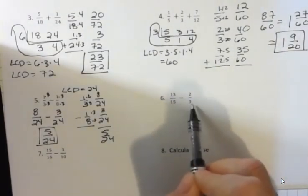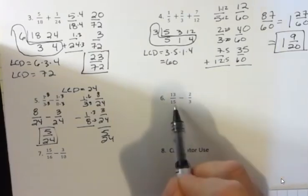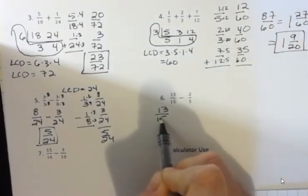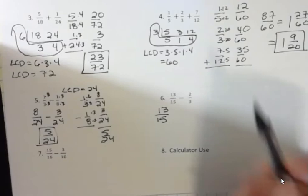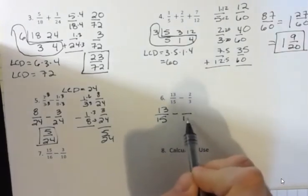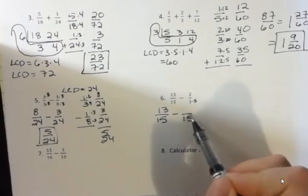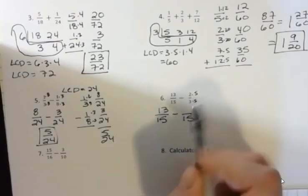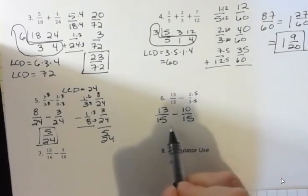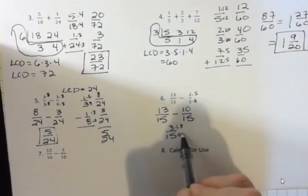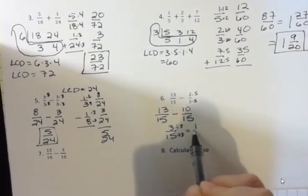In this one 15 and 3 have a common denominator of 15, which is this number right here. So if I wanted to do this horizontally, I would keep my first fraction the same. But I would change the second one to also have a 15 in the denominator. So 3 times 5 is 15, 2 times 5 is 10, and then 13 minus 10 is 3 over 15. But be careful because 3 15ths can be reduced. Both of those are divisible by 3, which gives me 1 5th.